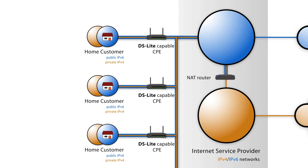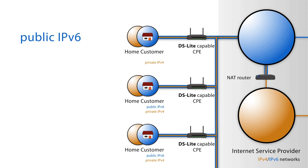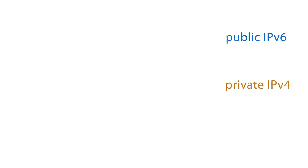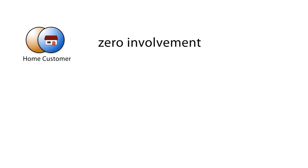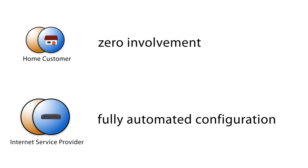If you are a DSL or cable provider, this mechanism could be useful for you because the clients have public IPv6 addresses and can still use all their home devices on IPv4 as they do today. In most cases, DS Lite deployment will require zero involvement from the customer, while fully automated configuration is possible on the service provider side.